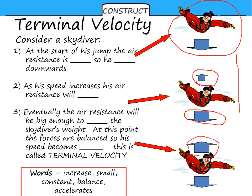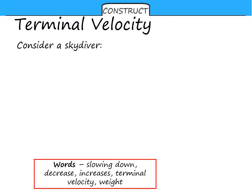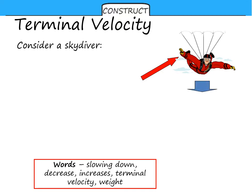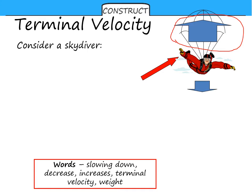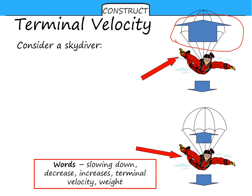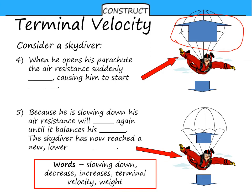At some point, the upward and downward forces will balance. Have a go at filling the gaps on the left. Now if he were to pull his parachute, the balance of forces would rapidly change. By pulling the parachute, you vastly increase the air resistance at a given speed, so initially there will be a large upward force causing a deceleration. But again, as air resistance is proportional to speed, as he falls and slows down, the forces will reach a new balance at a lower constant speed.